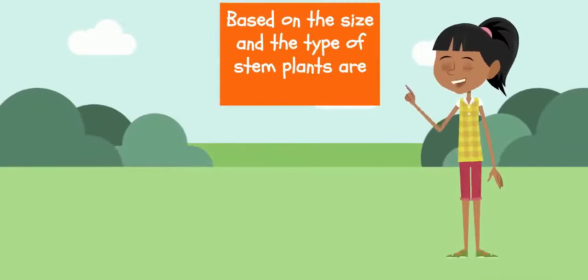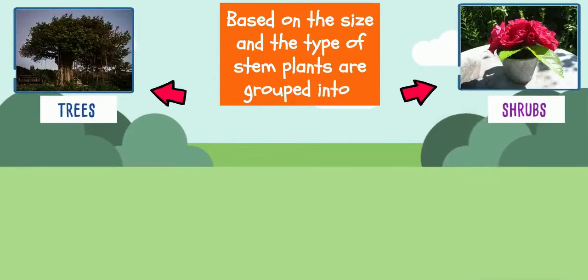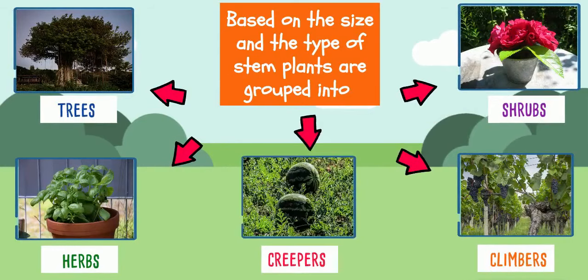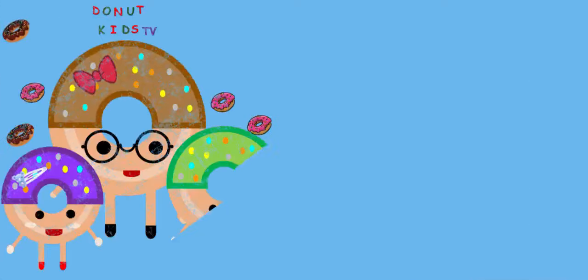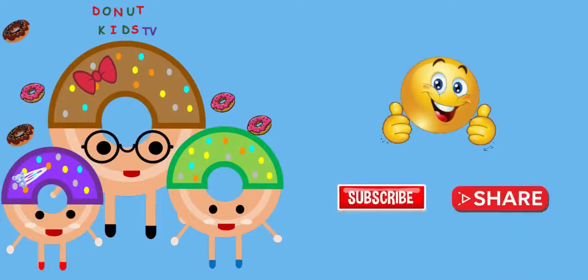Therefore, based on the size and type of stem, plants are grouped into trees, shrubs, herbs, climbers, and creepers. If you like this video, please like, subscribe, and share. Thank you.